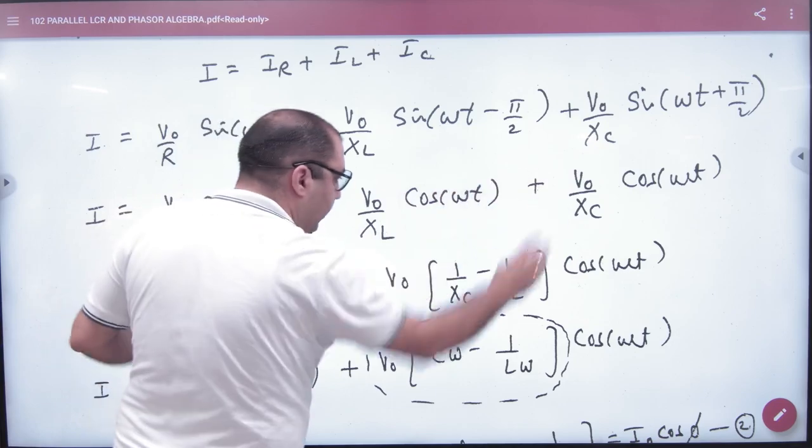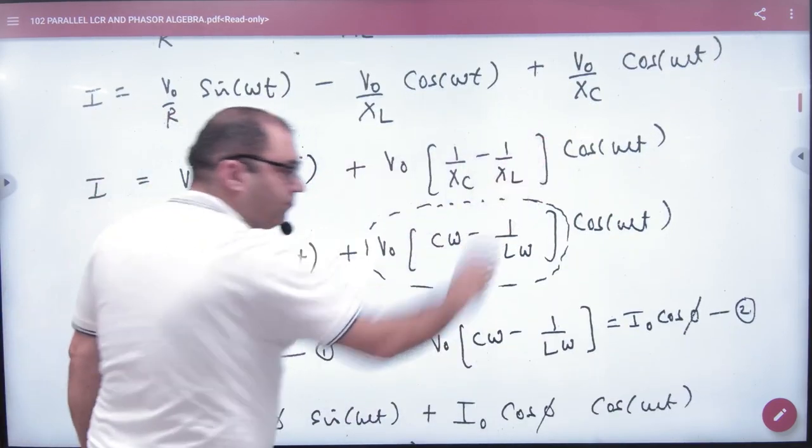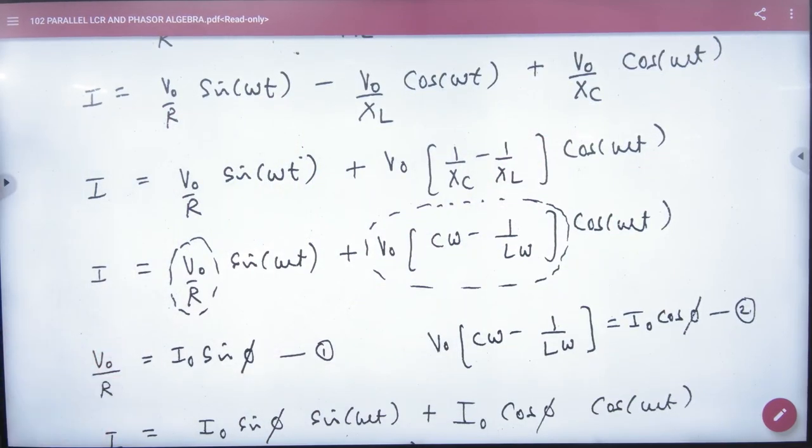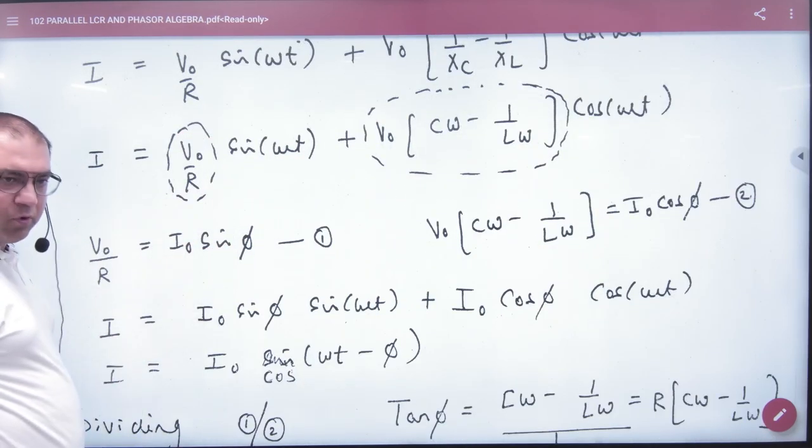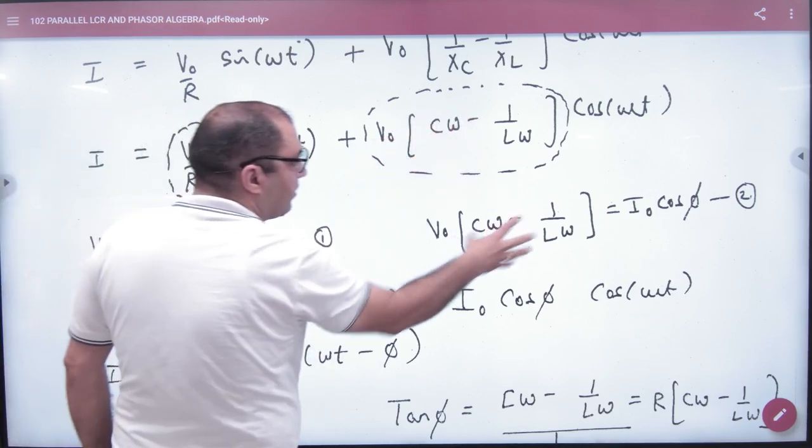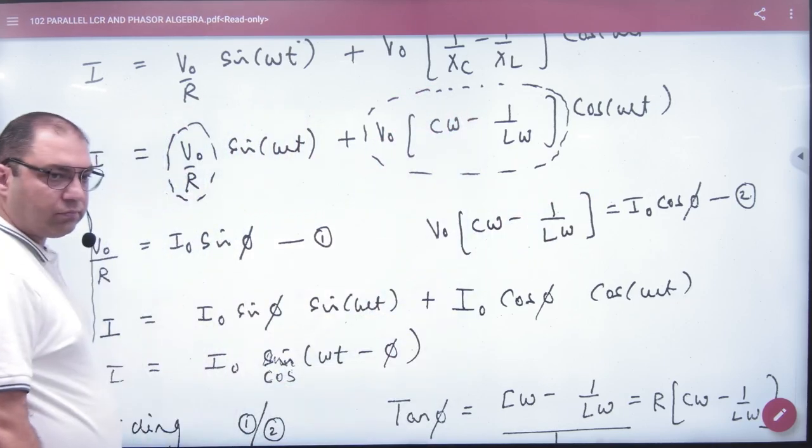From here, taking the common, you will have this term. If we modify this term, we will replace it. Like, I replace this term with I₀ sin(φ), let us suppose, and I replace this term with I₀ cos(φ).